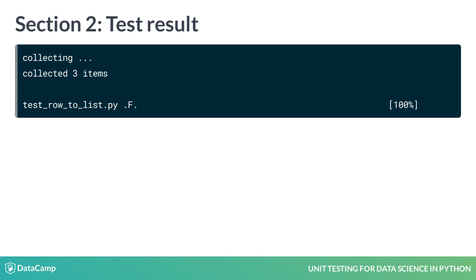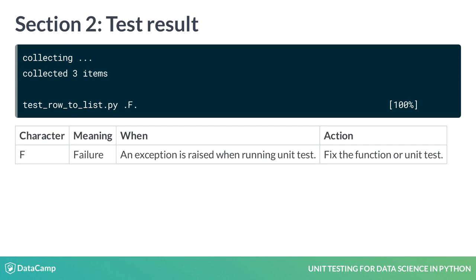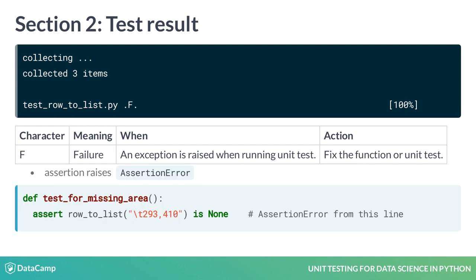The next line contains the test module name, TestRowToList.py, followed by the characters Dot, capital F, and Dot. Each character represents the result of a unit test. The character capital F stands for failure. A unit test fails if an exception is raised when running the unit test code. This happens most often when the assert statement raises an assertion error, meaning that the function has a bug and we should fix it.